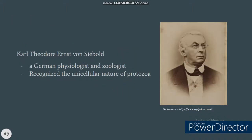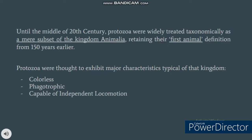Karl Theodor Ernst von Siebold was a German physiologist and zoologist who recognized the unicellular nature of protozoa. He proposed that the bodies of protozoans, such as ciliates and amoeba, consist of single cells, similar to those from which the multicellular tissues of plants and animals were constructed. Siebold redefined protozoa to include only such unicellular forms, excluding all metazoa or animals. For compact nucleus, they are described to contain more chromatin and are more dense compared to the vesicular nucleus.